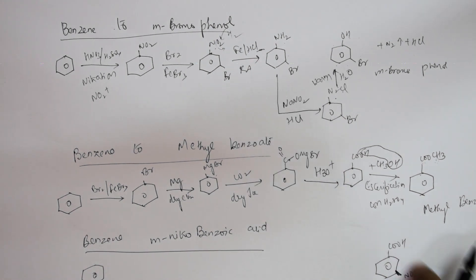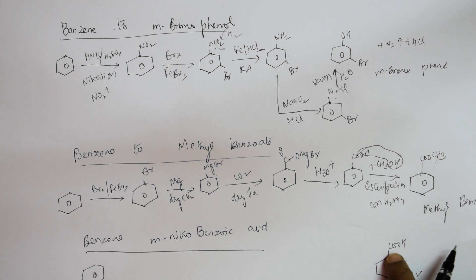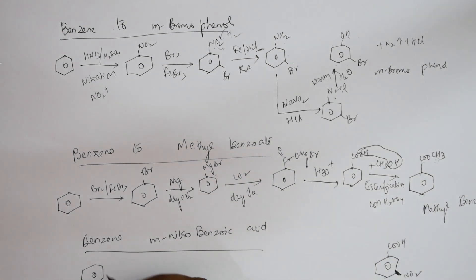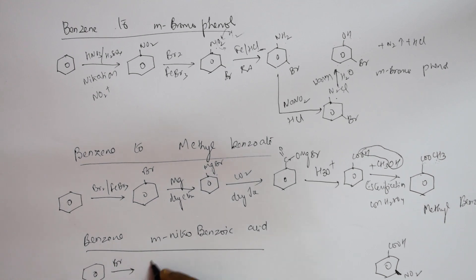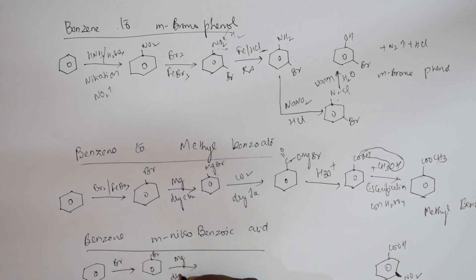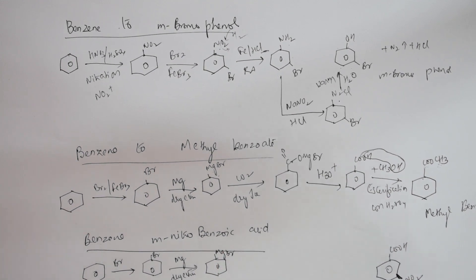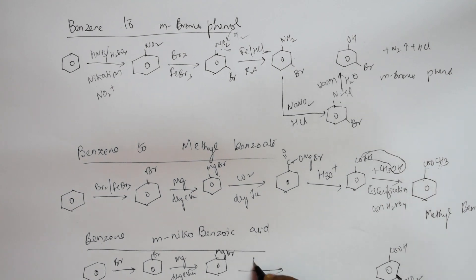To introduce the COOH group, I can't get it directly — I need to use a Grignard's reagent approach. First add Br using FeBr3 to get bromobenzene, then add magnesium in dry ether to prepare the Grignard's reagent (PhMgBr).